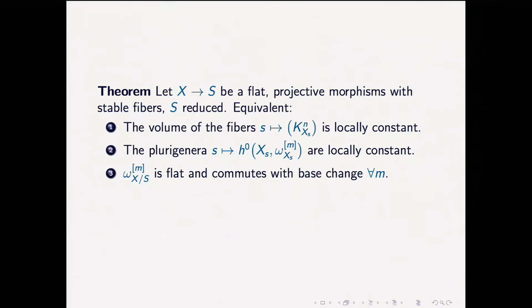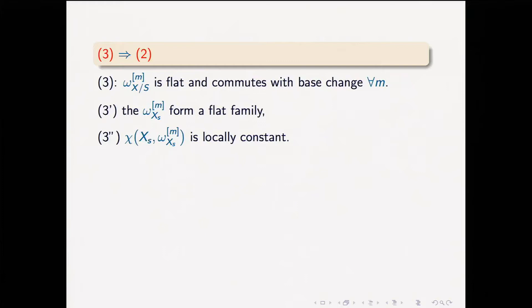I would like to explain the proof that these three are indeed equivalent. Let's see that 3 implies 2. Condition 3 is that these powers are flat and commute with base change. For commuting with base change, the most important thing is that if you restrict to the fiber, you get the expected thing. If this exponent is 2, we expect that these sheaves have no higher homologies.